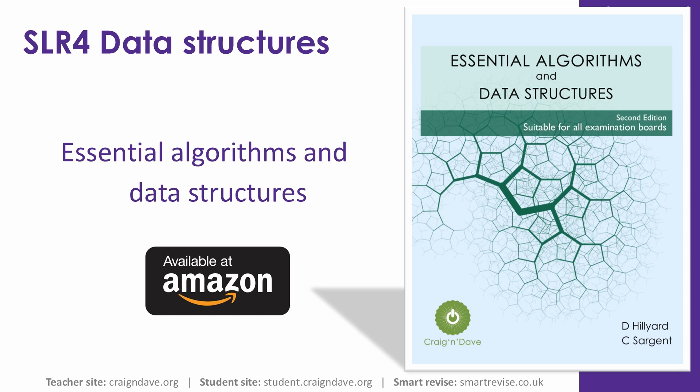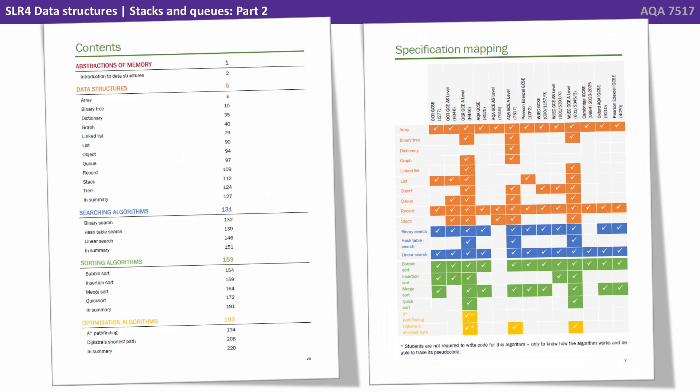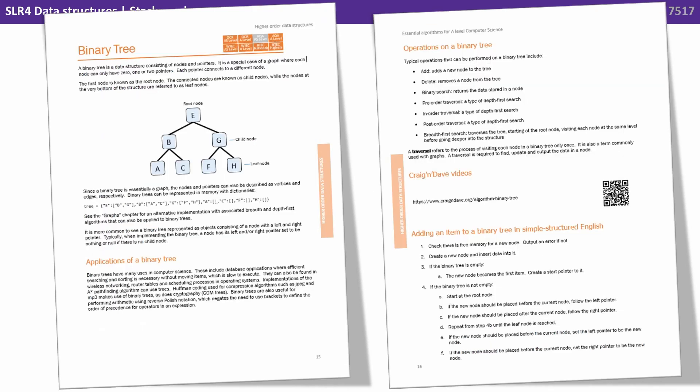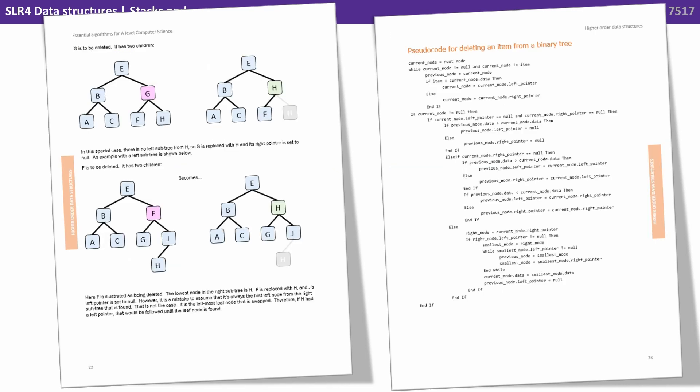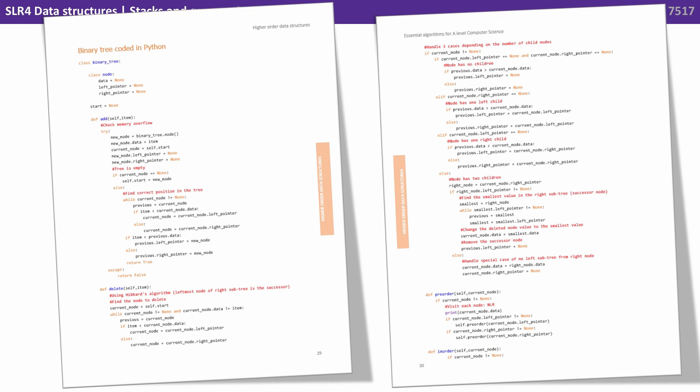Data structures and algorithms are one of the hardest areas of the course, and we've therefore written a dedicated book available to purchase on Amazon. The book covers all the data structures and algorithms you need to be aware of for the exam, with each one having its own dedicated chapter. Each chapter overviews the data structure or algorithm, gives you applications, operations, links to our videos online, and goes over the algorithm in simple structured English, a visualisation, pseudocode, and is fully coded in Python, C-sharp, and Visual Basic.